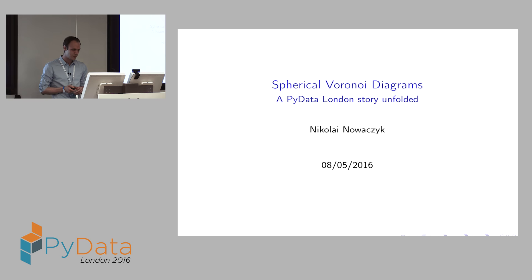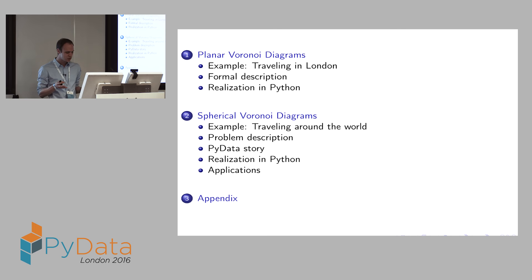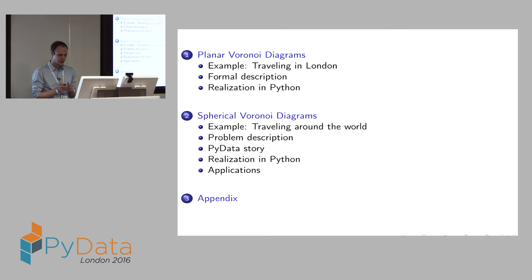In this talk I'm going to talk about spherical Voronoi diagrams, primarily about the spherical case, but in order to understand Voronoi diagrams it makes sense to start with planar Voronoi diagrams. I will try to give you an introduction that is as intuitive as possible, tell you how to formally write down these problems, and discuss how to solve the problem of computing Voronoi diagrams in Python. In the second part I would also like to highlight why this is a particularly a PyData story.